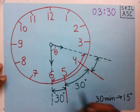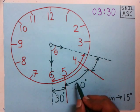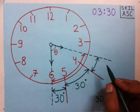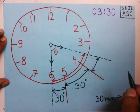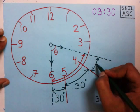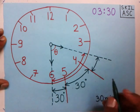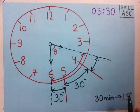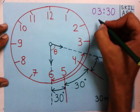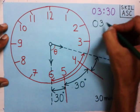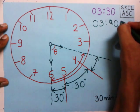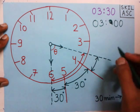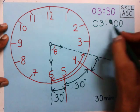We have now found out these two angles — each is 30 degrees. Now we have to find this third angle. To find this third angle, we take a reference time: 3 o'clock. We take 3 o'clock as our reference time.